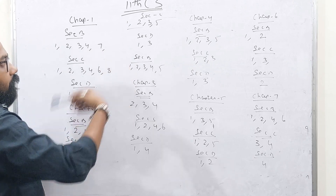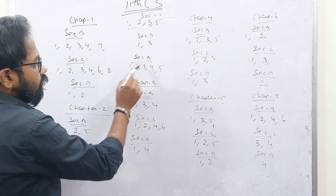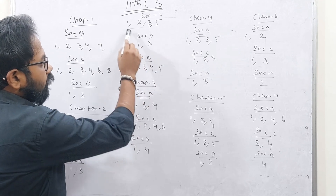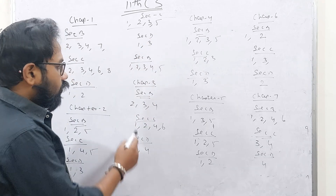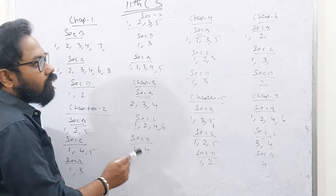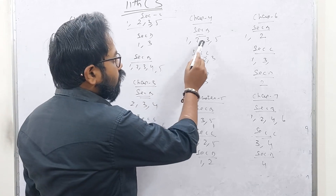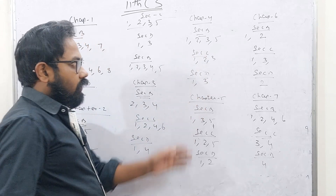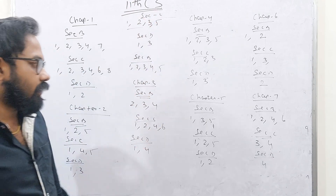Chapter 2, second section: Section D is 13. Section B is 1, 2, 3, 4, 5. Section D is 12. Chapter 3 is easy. Section D: 1, 2, 4, 6. Section D is 14. Chapter 4, Section B: 1, 2, 3, 5. Section C: 1, 2, 3. Section D: 13. Chapter 4 is a very easy lesson.